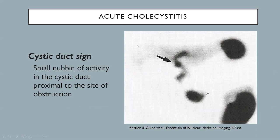This is another case of acute cholecystitis where radiotracer activity from the liver has already progressed into the common bile duct, and much of it has excreted into the small bowel. There is a nubbin of activity in the cystic duct proximal to the site of obstruction — this is the cystic duct sign associated with acute cholecystitis.